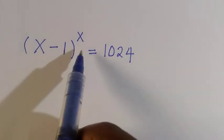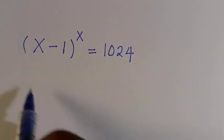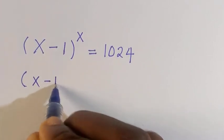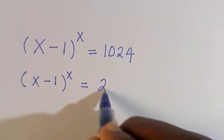We have (x-1)^x = 1024. So here we have it as (x-1)^x equals 1024, which is 2 to the power of 10.